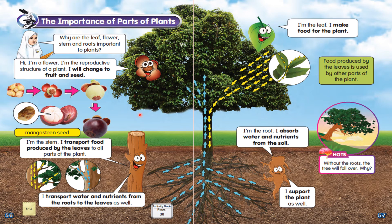Next, we go to the stem. The stem says: I transport food produced by the leaves to all parts of the plant. I also transport water and nutrients from the roots to the leaves.